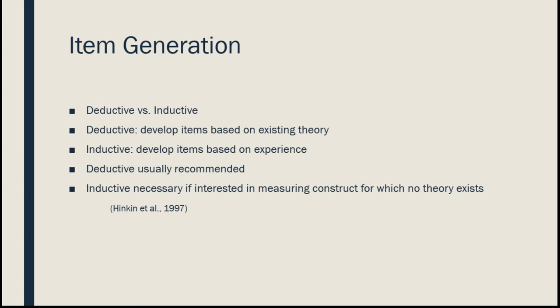The item generation section is when you come up with the questions or items — usually written as statements that people agree or disagree with. There are two ways to generate items: deductive versus inductive. In a deductive model, we start with a theory and develop items based on that theory. Inductive is the opposite — we develop items based on experience when there's no established theory. The deductive approach is generally recommended; inductive is used only when necessary.